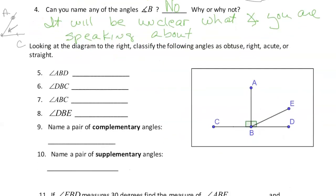Look at the diagram to the right — classify the following angles as obtuse, right, acute, or straight. Angle ABD was 90 degrees, and that's going to be a right angle.